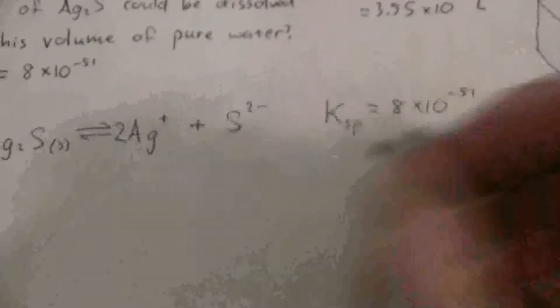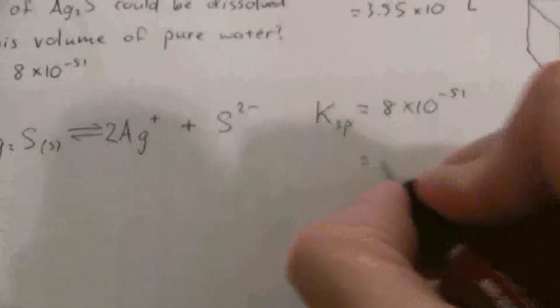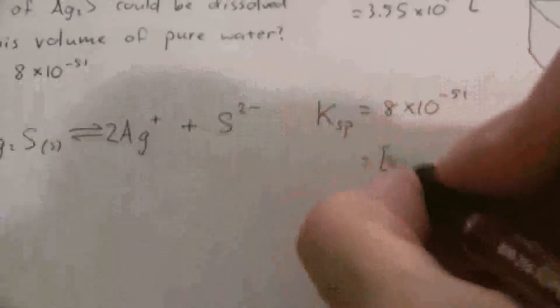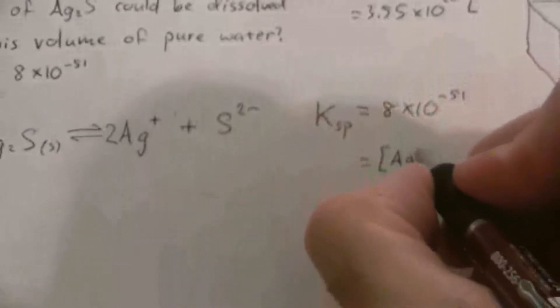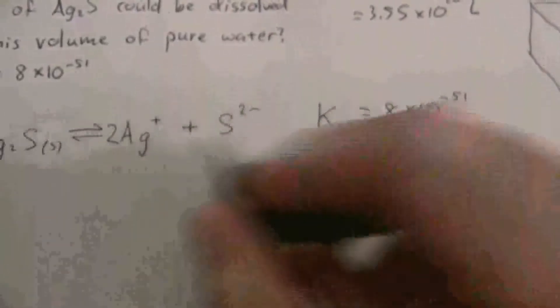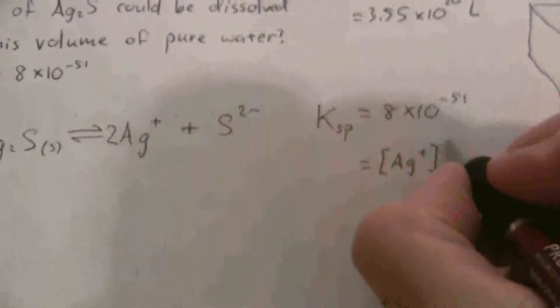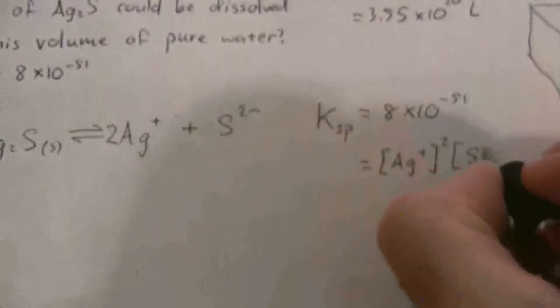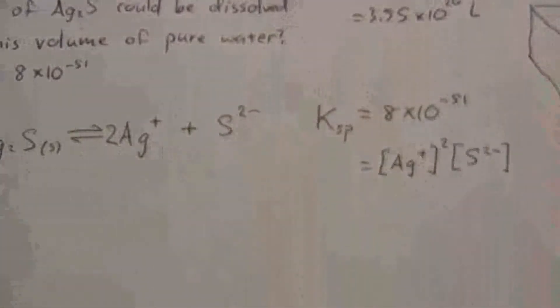The Ksp of course is equal to the concentration of the silver ions squared times the concentration of the sulfide ions.